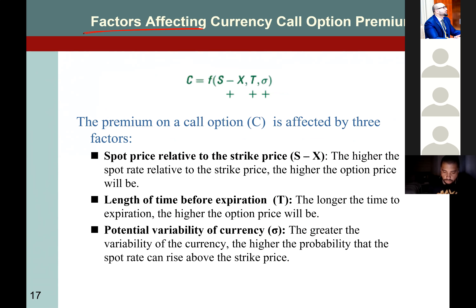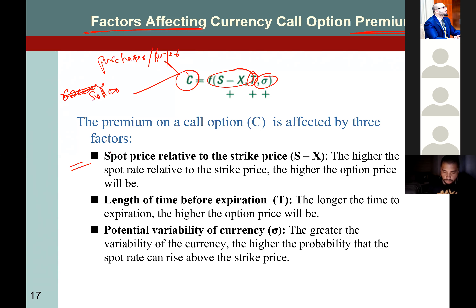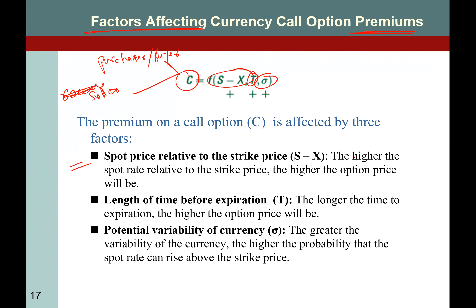Let's move forward with factors that affect the currency call option premiums. The purchaser or buyer will pay the premium, and the seller will receive the premium. Premium depends on three factors. Number one: spot price relative to the strike price. The higher the spot rate relative to the strike price, the higher the option price will be. If spot price minus the exercise price is higher, the more the value of the premium.